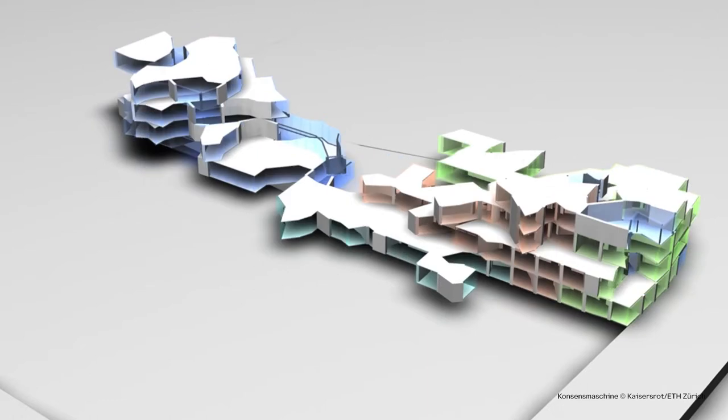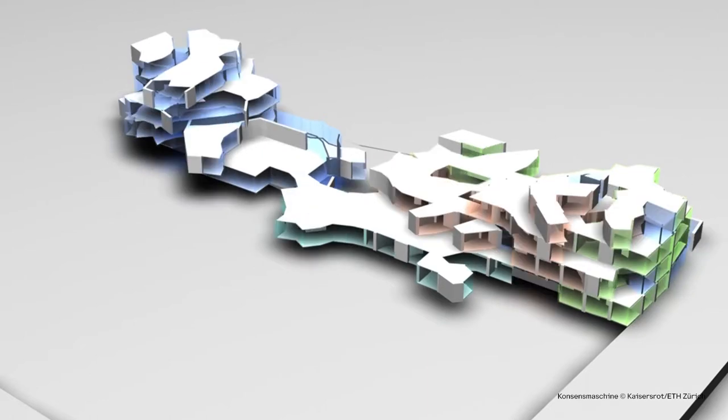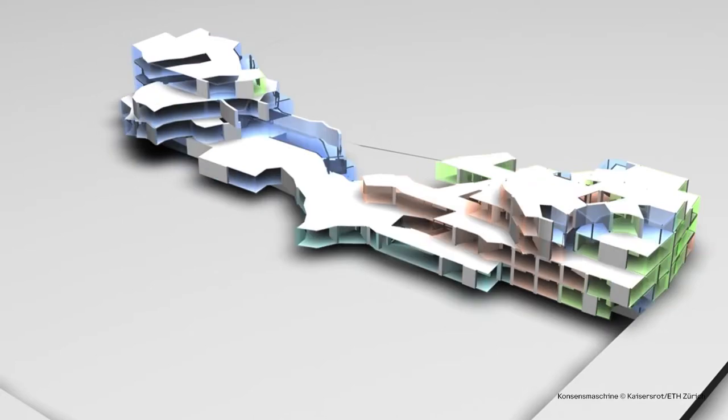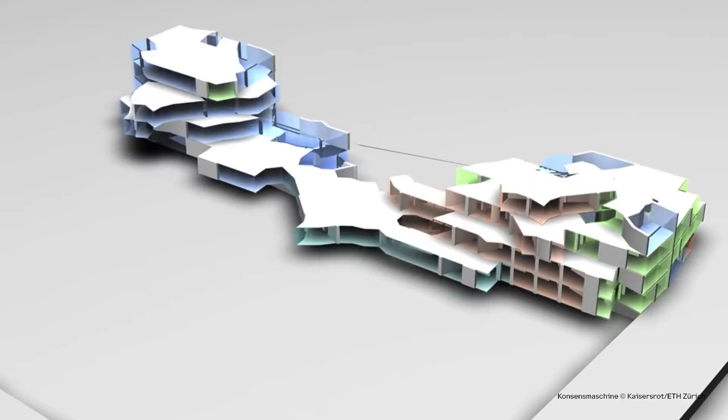As the example demonstrate, an evolutionary approach can not only be used to optimize an existing topology, but to actually come up with the building topology itself. Which brings us back to our main topic, generative methods. There are actually many and very different approaches to generative forms with algorithms, and I will present some of them in a moment.